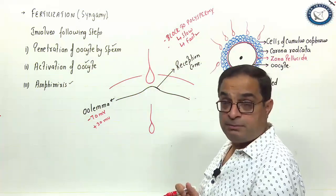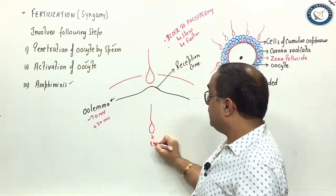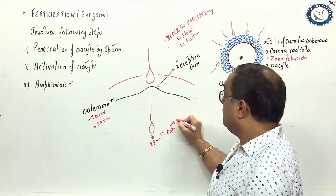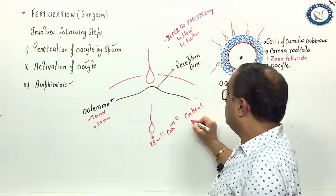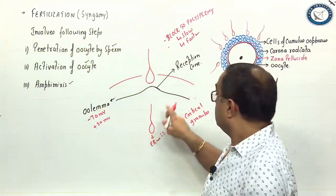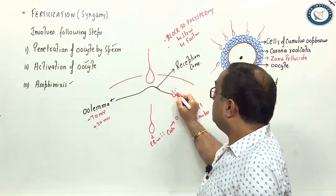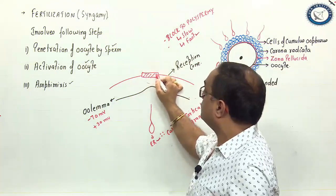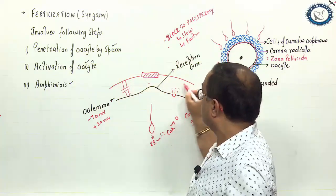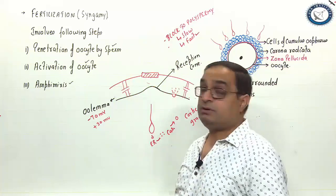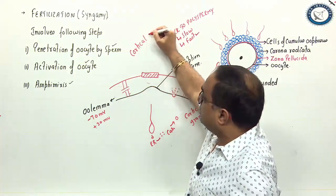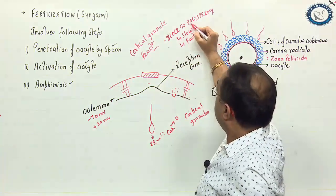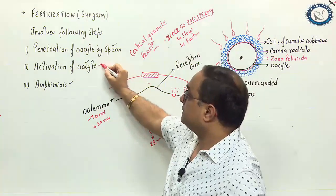Now what is slow block to polyspermy? In slow block to polyspermy, the sperm stimulates the endoplasmic reticulum of the oocyte to release calcium ions. These calcium ions then stimulate the cortical granules to fuse with oolemma. Cortical granules are present in the oocyte. The cortical granules fuse with oolemma and they liberate their contents in the perivitelline space. What these contents will do? They will cause repair of the damaged part of the zona pellucida plus they will also break the bonds which are holding zona pellucida and oolemma together. This is what is called cortical granule reaction. Cortical granule reaction and the change in membrane potential of oolemma prevents polyspermy. This is also a part of activation of the oocyte.